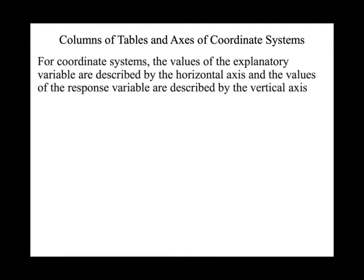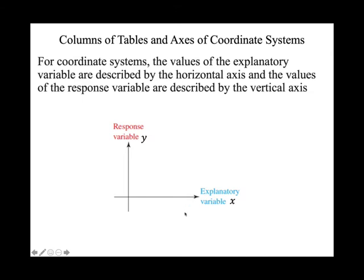For the coordinate system, the values of the explanatory variable are described by the horizontal axis and the values of the response variable are described by the vertical axis. When you have a graph, the X axis always uses the explanatory variable and the Y axis is always the response variable.